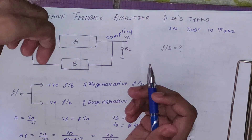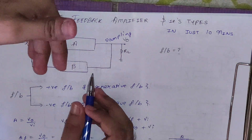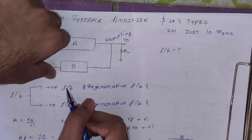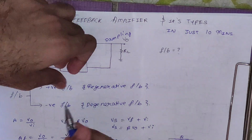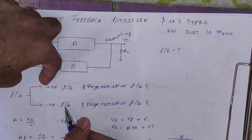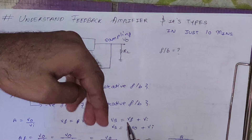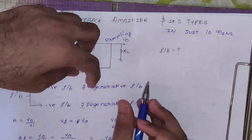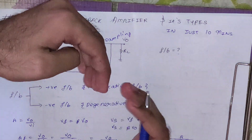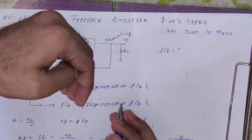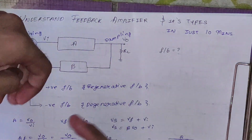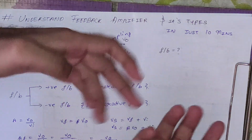Now let us see what are the types of feedback. There are two types: positive feedback and negative feedback. For positive feedback we say it is regenerative feedback, and for negative feedback we say it is degenerative feedback — because in positive feedback the gain increases, and in negative feedback the gain decreases. We will see how this is done.